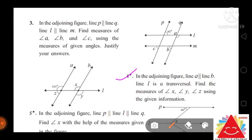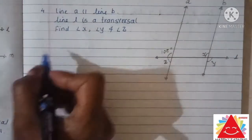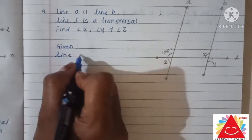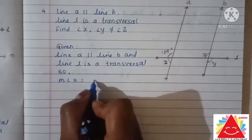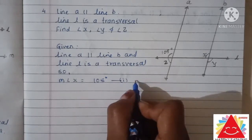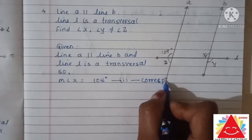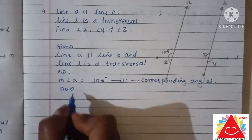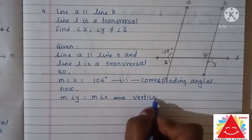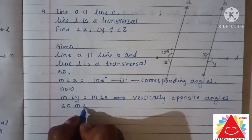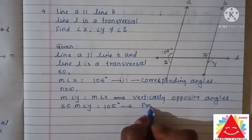Question number 4: in the adjoining figure, line A is parallel to line B and line L is a transversal. Find the measure of angle X, angle Y, and angle Z using the given information. Angle X equals 105 degrees because it is a corresponding angle, and corresponding angles are always equal. The measure of angle Y equals the measure of angle X because they are vertically opposite angles, so angle Y equals 105 degrees.